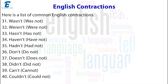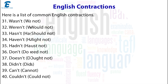29. Isn't = is not. 30. Aren't = are not. 31. Wasn't = was not. 32. Weren't = were not. 33. Hasn't = has not. 34. Haven't = have not. 35. Hadn't = had not. 36. Don't = do not. 37. Doesn't = does not. 38. Didn't = did not.